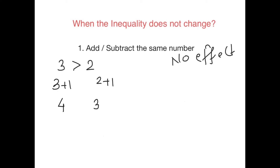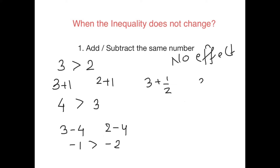What if I subtract a number? Let's subtract four: three minus four versus two minus four gives minus one versus minus two, and minus one is more than minus two. What if I add or subtract a fraction? Three plus one-half versus two plus one-half gives seven-halves versus five-halves, and clearly seven-halves is more than five-halves. So the inequality does not change when you add or subtract the same number to both sides.